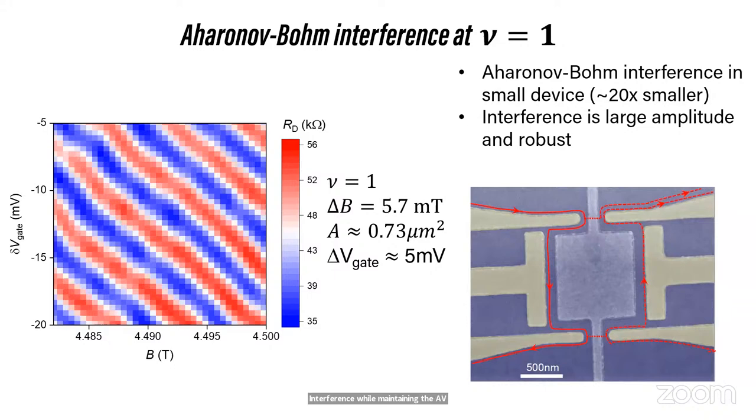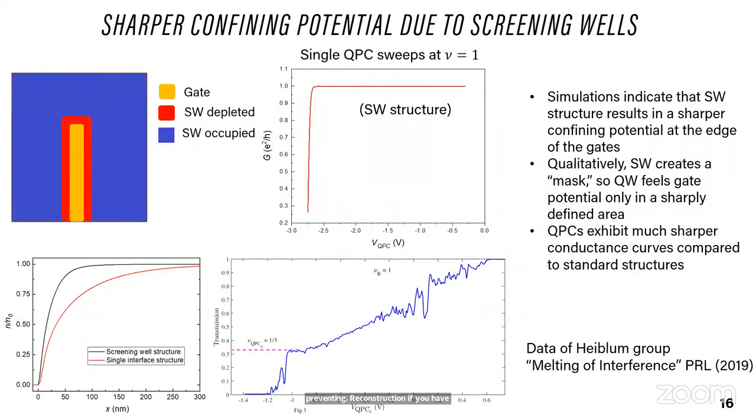We can actually quantify the temperature dependence of that coherence. So putting these screening layers in allows us to shrink the device down. So we have highly coherent interference while maintaining the AB regime. It also has a secondary benefit for the experts that makes the confining potential at the edge sharper, which increases the edge velocity, which is a very powerful tool in coherence, but also preventing edge state reconstruction if you have soft potential.